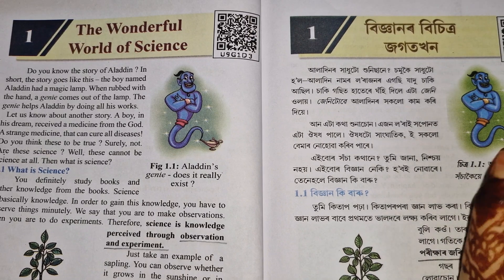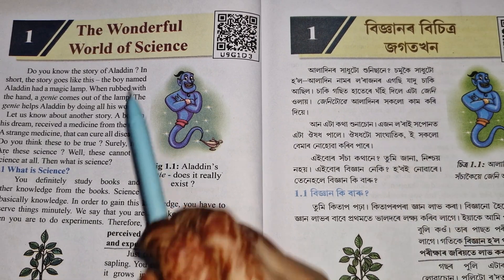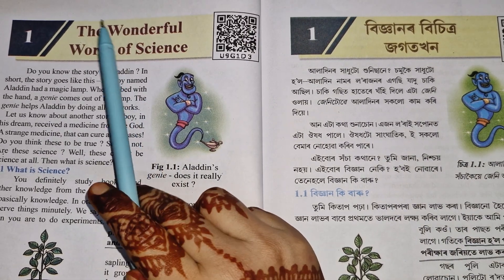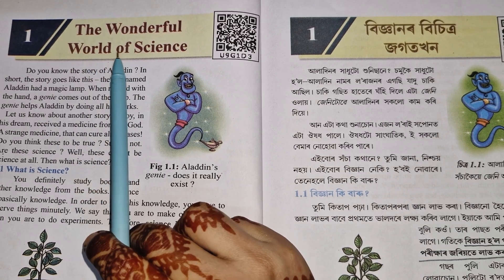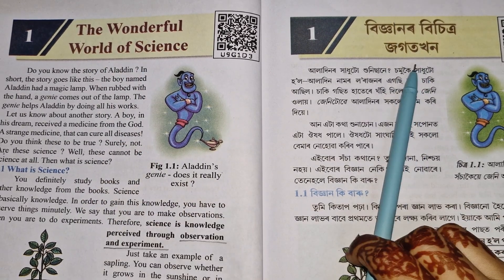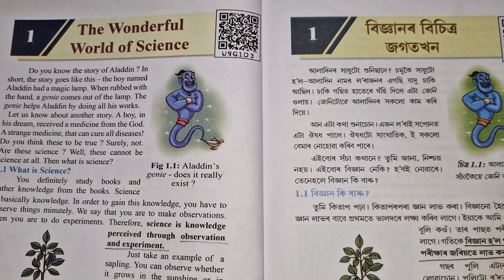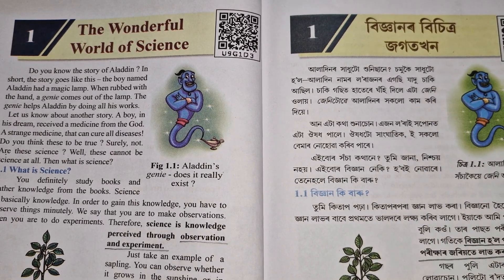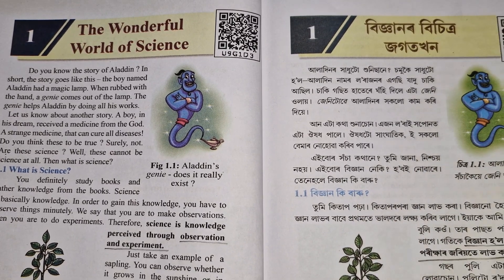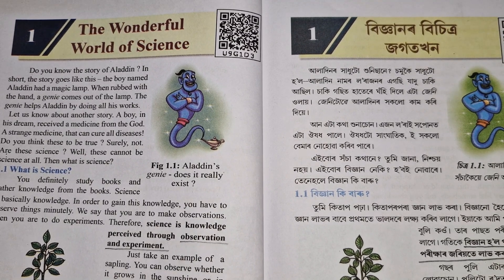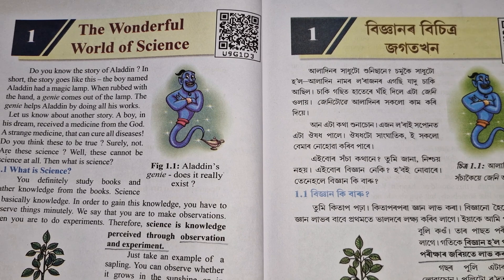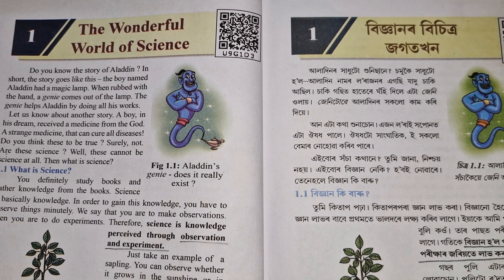Genious Creativity Learning. Class 6 Science, Chapter 1 Part 1: 'The Wonderful World of Science.' This video covers Chapter 1. For Chapter 2, a link is provided in the description box to the second channel. Subscribe and upload notifications are also mentioned.